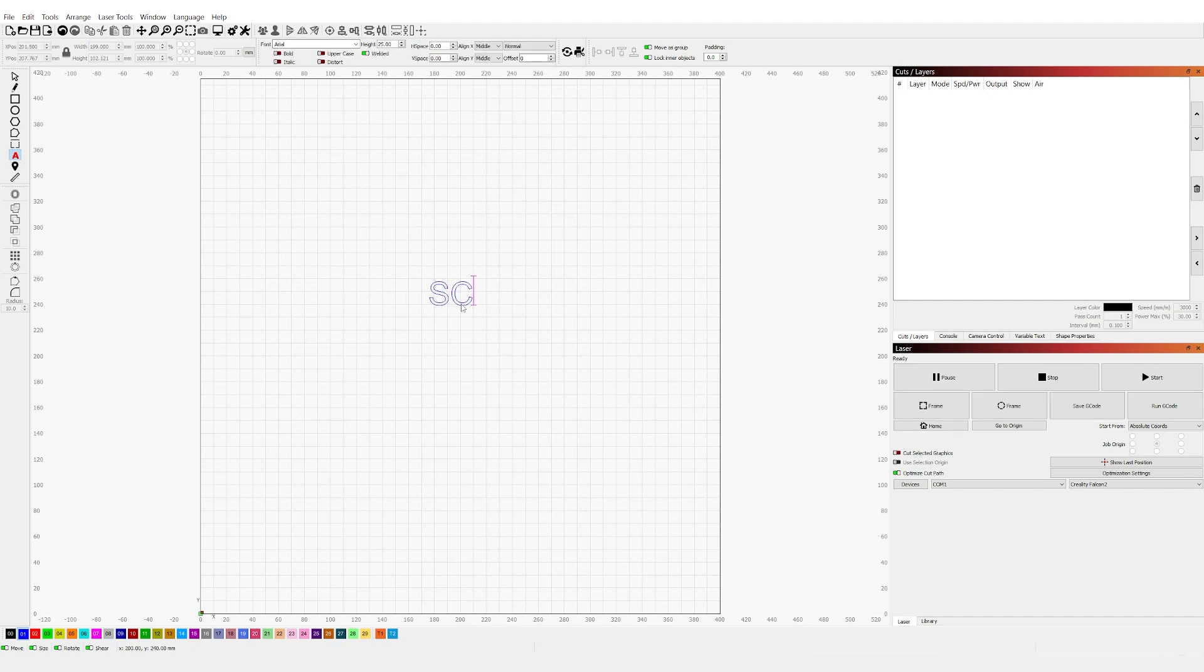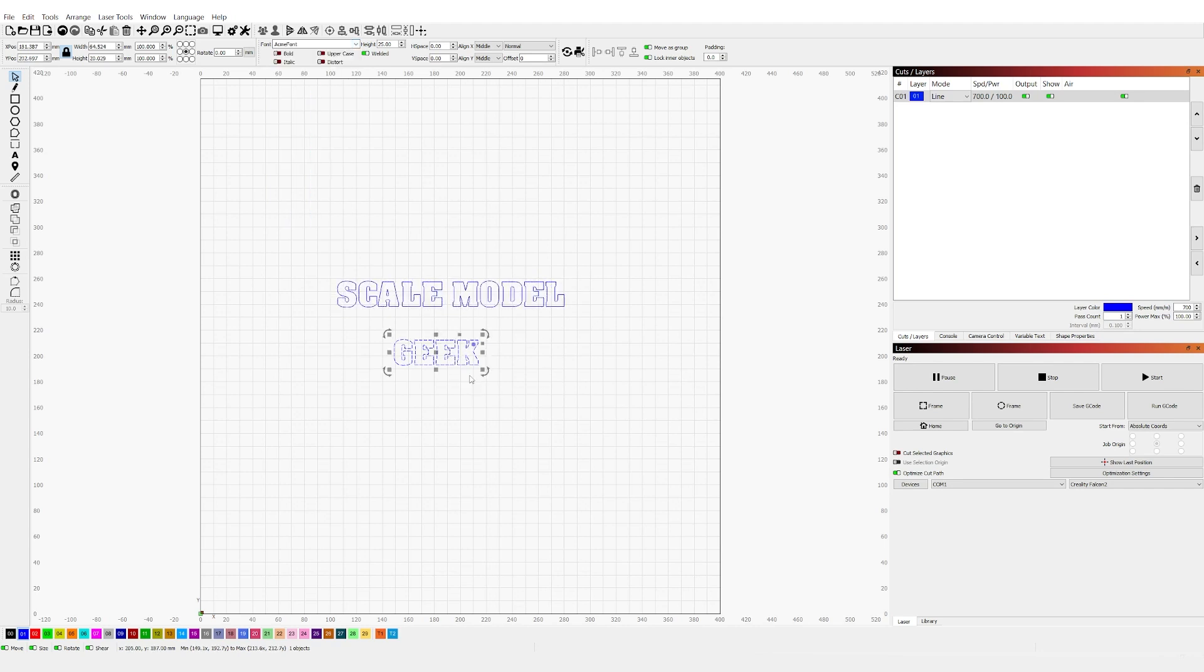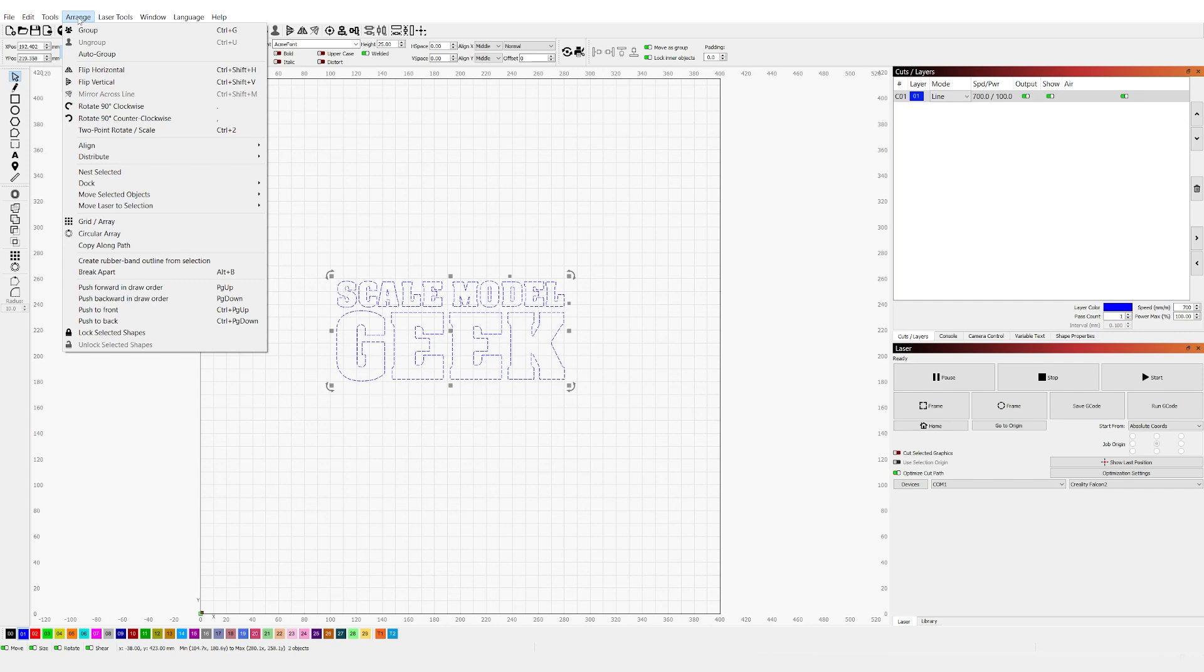I started off by selecting a font or rather the font tool, typing out my little name. I did these in two different sections because I needed to resize them. I then went to the selection tool and then picked the font that I preferred. Then I selected the geek, then adjusted the size using the bounding box. Once I had the sizes that I wanted I selected both the text, headed up to arrange, then move selected object and move to page center.